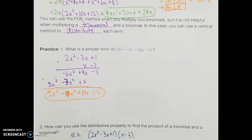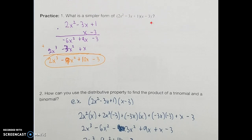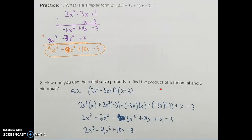Instead of using the vertical method, I can use distribution to solve the same problem. It's pretty much the same steps as with binomials, except now we have more to distribute. Taking the first trinomial, I distribute each part: 2x squared times x, 2x squared times negative 3, then negative 3x times x, and negative 3x times negative 3, then 1 times x — so just x — and 1 times negative 3, giving negative 3. The final step is to simplify each product, then look for like terms: negative 6x squared and negative 3x squared gives negative 9x squared, and 9x plus x gives 10x. We get the same answer as before.